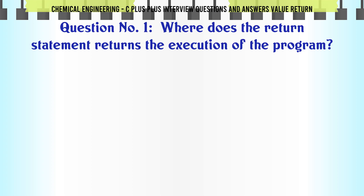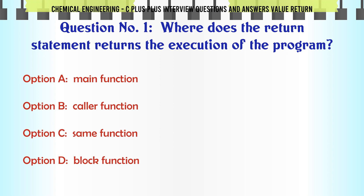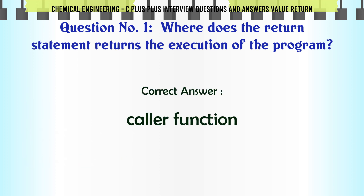Where does the return statement return the execution of the program? a. Main function. b. Caller function. c. Same function. d. Block function. The correct answer is: Caller function.